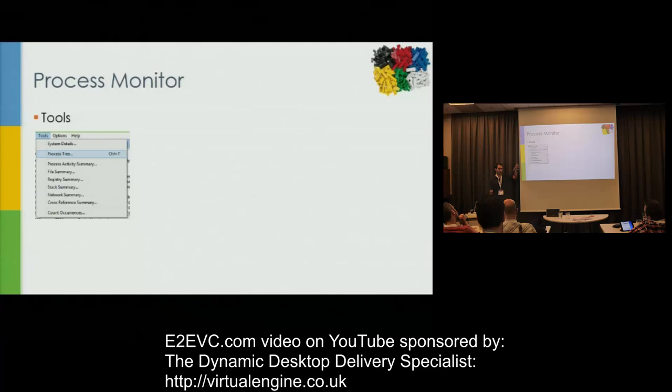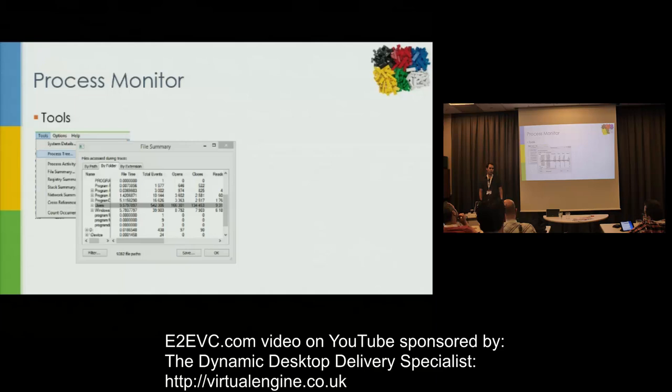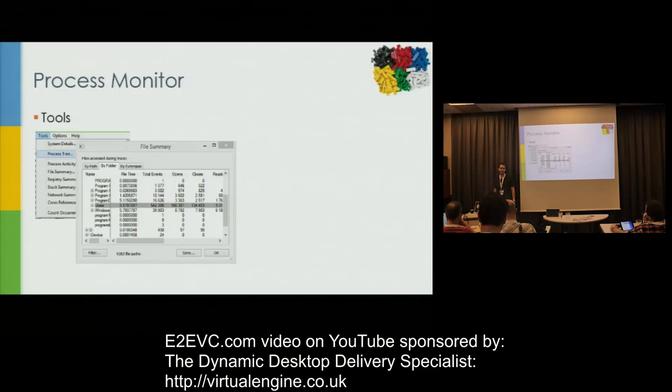The first one is the file summary — where is the file activity going on? Where are all the writes, reads, events happening? Are we doing more in the user's profile or in Program Files? That could give you an idea of what the problem is. Maybe the file server shows up here and you know it's down — that might be the problem. This is intended to make sense of the huge amount of data and point you in the right direction.